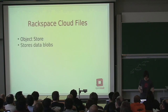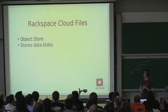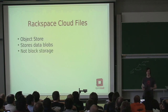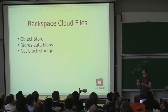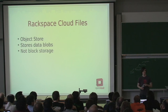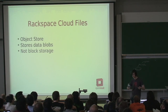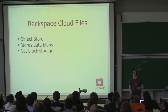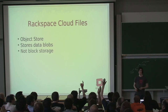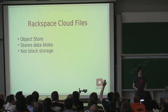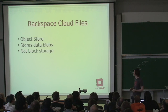These objects are essentially blobs of data. It doesn't work as a block store — you cannot make an object on Rackspace Cloud Files turn up as a block device on your Linux system. You cannot run mkfs on top of it. You can only address it as full objects at a time. Have any of you used Rackspace Cloud Files or Amazon S3? This is basically the same thing.